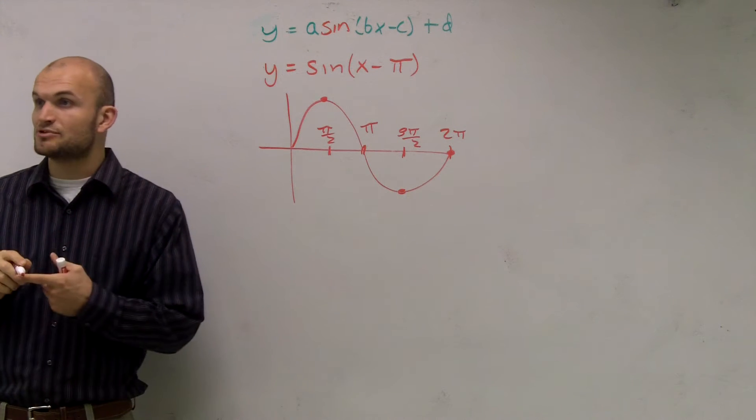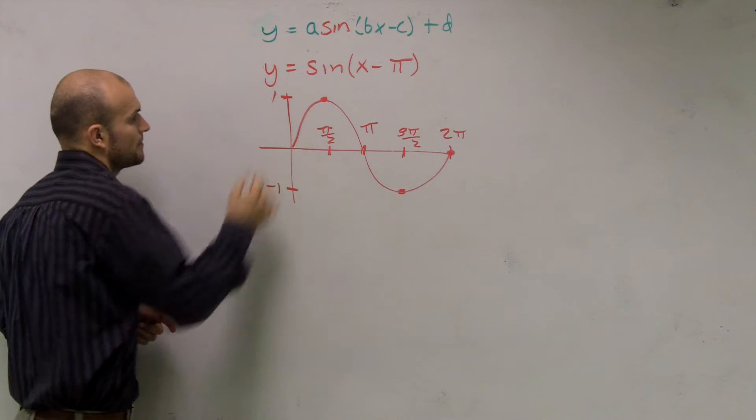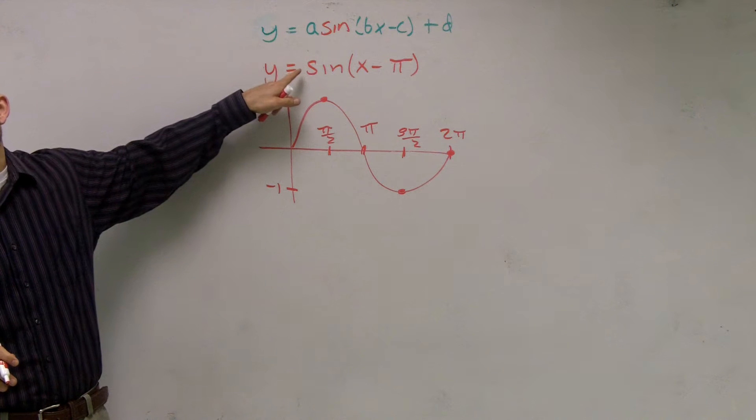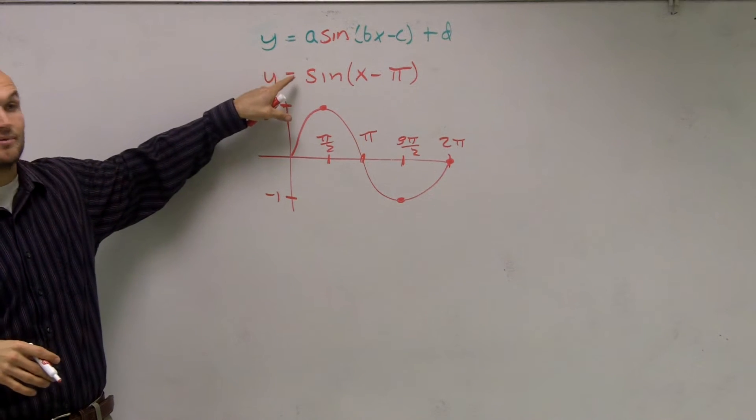Alright, now, that is when your period and your amplitude has been unchanged, right? It goes as high as 1 and as low as negative 1. Now, if you look at this graph, did I change anything with the amplitude? No, right? There's no number in front of 1 that's changing amplitude. So my amplitude is still going to be 1.